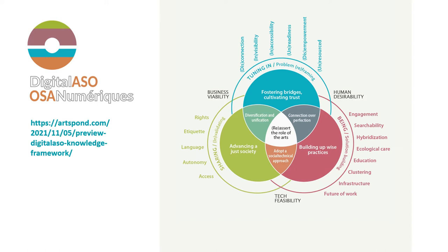Including rights, etiquette, language, autonomy, and access, Digital ASO participants identified elementary and profound understandings of what a just digital future can and needs to be in arts and culture. With all of you, it is our hope that Together There will now dive more deeply into finding new understandings as our next collective step. For a more detailed visual description and discussion of the Digital ASO knowledge framework, please visit digitalASO.ca or artspond.com and search for, on the blog, the Digital ASO knowledge framework preview.